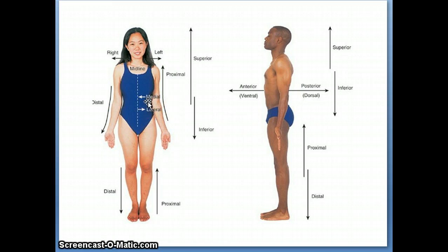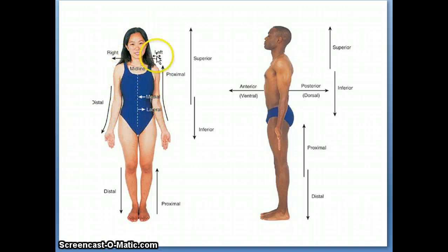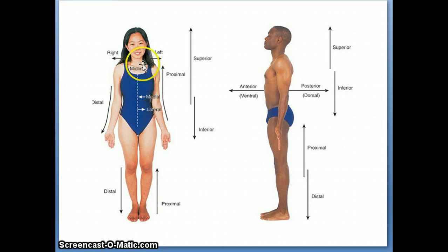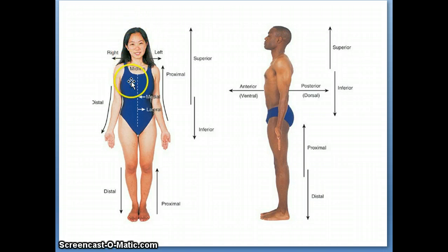The next two we're going to look at are superior and inferior. The superior part is the part that's closer to the head, and the inferior part is going to be farther from the head. We use superior and inferior when we're talking about the head and torso. So, the nose is going to be blank to the belly button. The nose is going to be the superior part because it's closer to the head. The belly button is going to be inferior to the nose because it's farther from the head. Also, if I did the nose and the mouth, the nose would be superior to the mouth because it's higher up. Those are the terms we use when we're talking about the head and the torso.